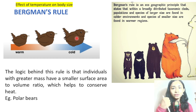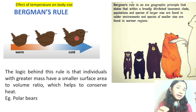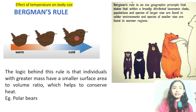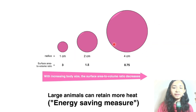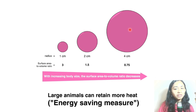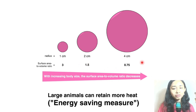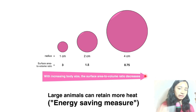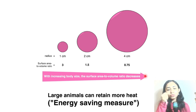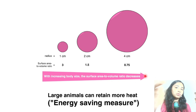In very cold temperatures, you have to retain heat to survive. That is why animals in cold climates tend to increase in body size — it helps them retain body heat. As you can see in this example, the same species with increasing body size shows a decreasing surface area to volume ratio: from 3, to 1.5, to 0.75. Large animals can retain more heat — it is an energy saving measure.